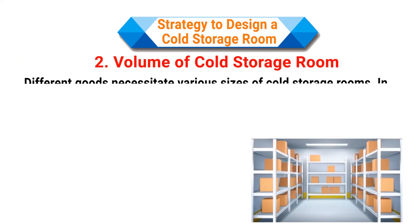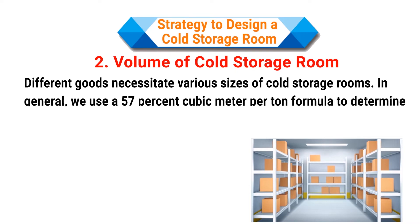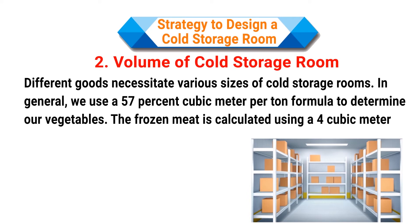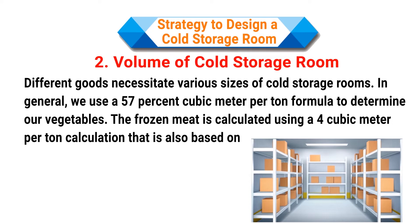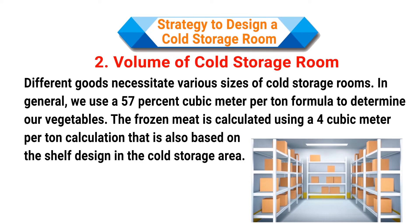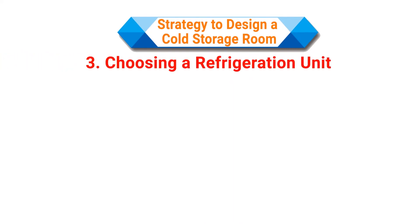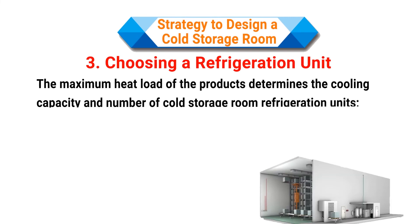Different goods necessitate various sizes of cold storage rooms. In general, we use a 5–7 cubic meter per ton formula to determine sizing for vegetables. Frozen meat is calculated using 4 cubic meters per ton, which is also based on the shelf design in the cold storage area.